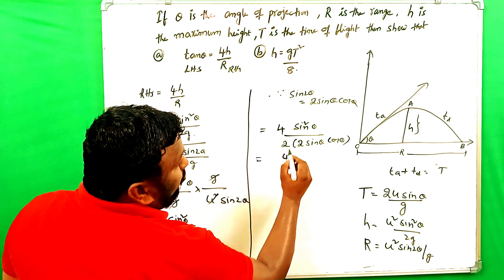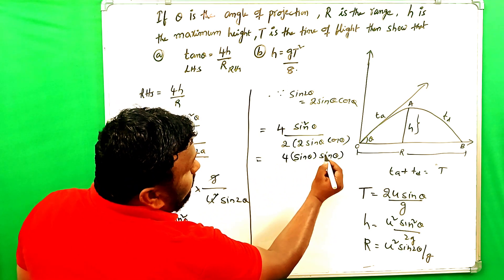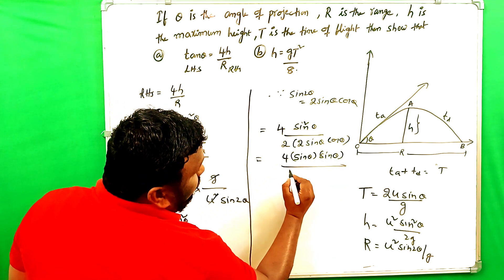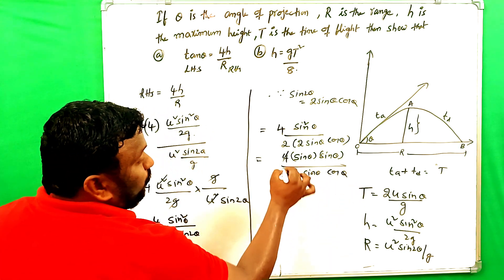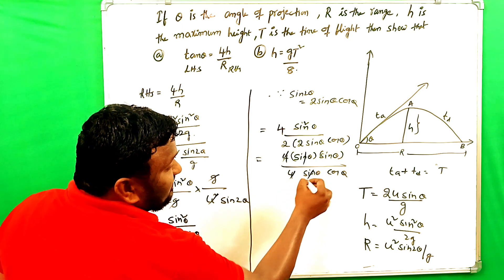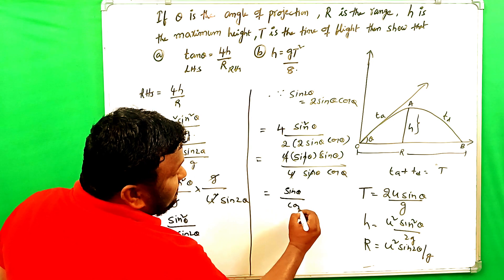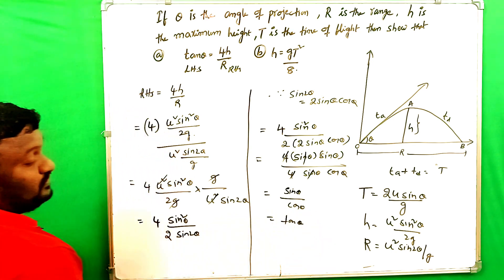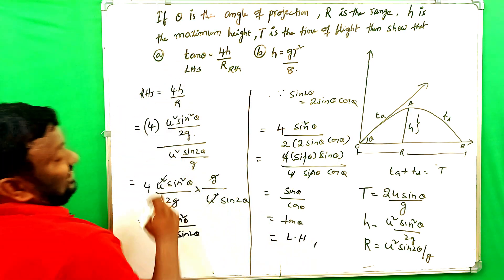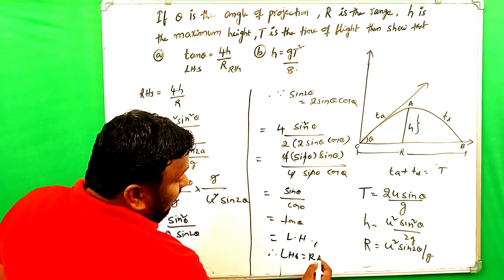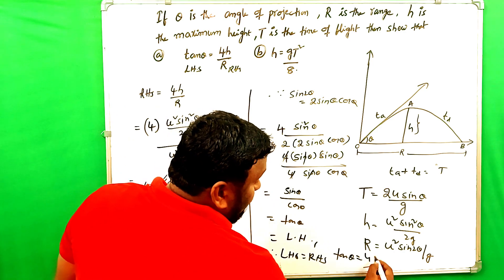Again, that is equals to 4 sin square theta sine theta into sine theta, and that should be 2 into 4, 4 into sine theta cos theta. Then what do you get? 4, 4 cancel, sine theta sine theta cancel. What do you get? Sine theta by cos theta. That is equals to tan theta. So that is LHS. Tan theta is LHS. Therefore LHS is equals to RHS. That means tan theta is equals to 4H by R.